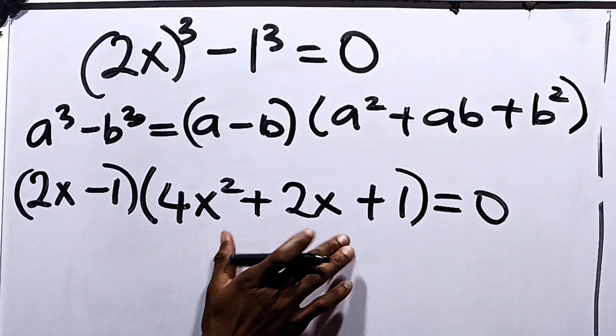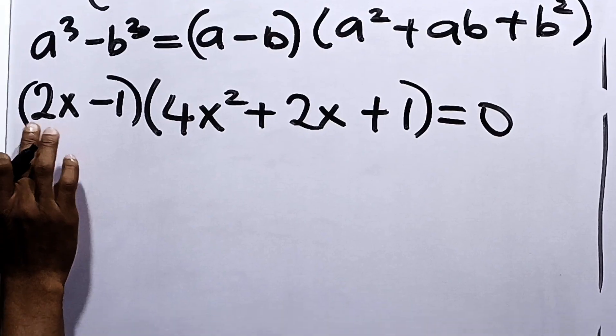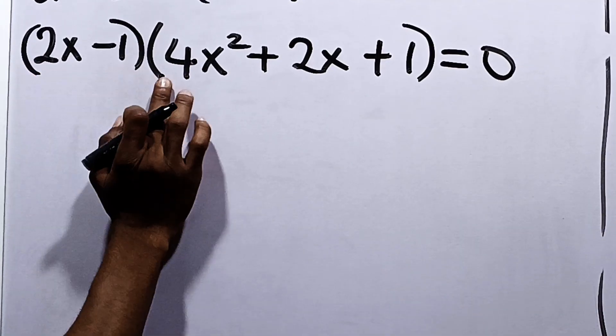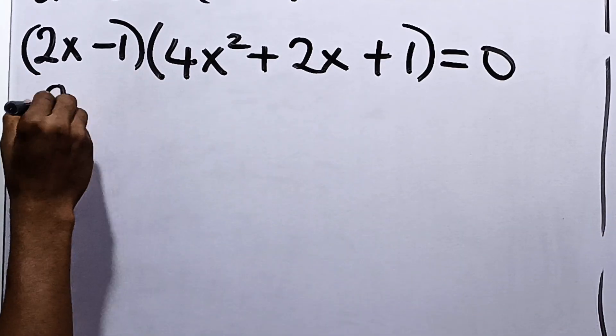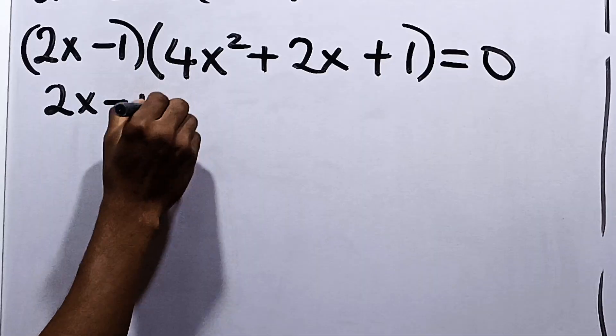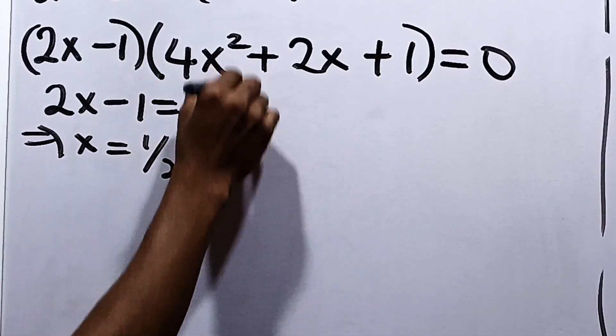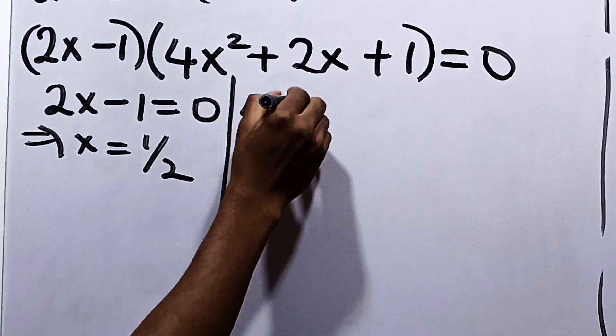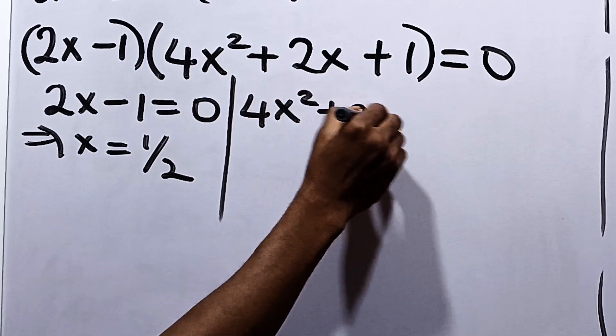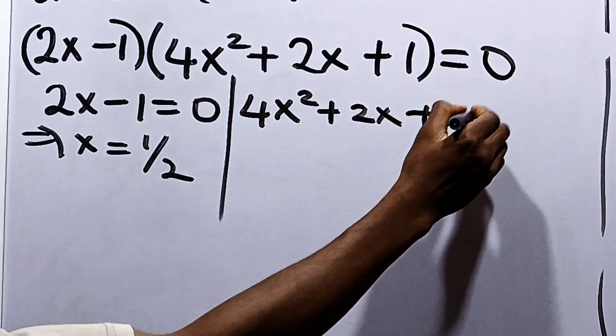Now this is the product of 2 being equal to 0. When the product of 2 is equal to 0, it's either that the first one is equal to 0, or the second one is equal to 0. So, it's either 2x minus 1 is equal to 0, which implies that x is equal to 1/2.